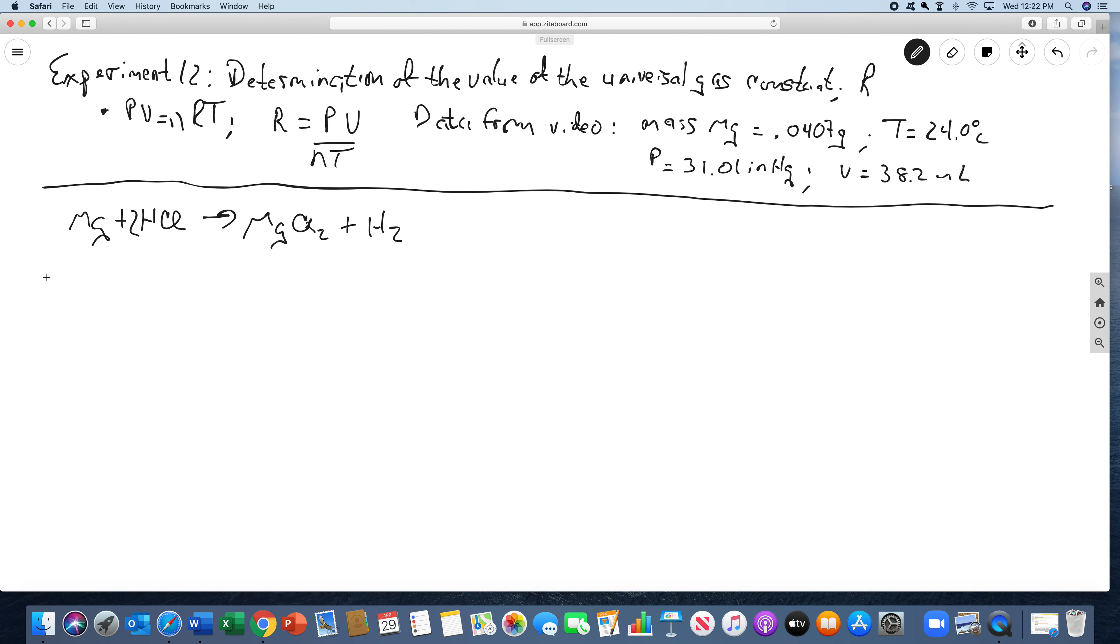I'm going to go through all of the calculations. The first calculation is we need to get the moles of hydrogen. So we have 0.0407 grams of magnesium. Using the molar mass we know that there's one mole of magnesium for 24.305 grams of magnesium. Feel free to hit pause on this if you need to.